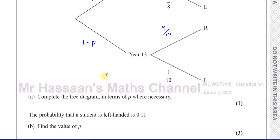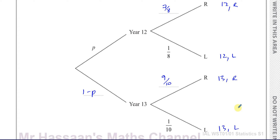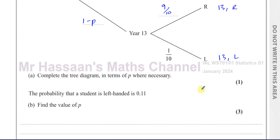Then it says the probability that a student is left-handed is 0.11. Find the value of P. So the outcomes are: year 12 and right-handed, year 12 and left-handed, year 13 and right-handed, and year 13 and left-handed. The probability that a student is left-handed is 0.11.